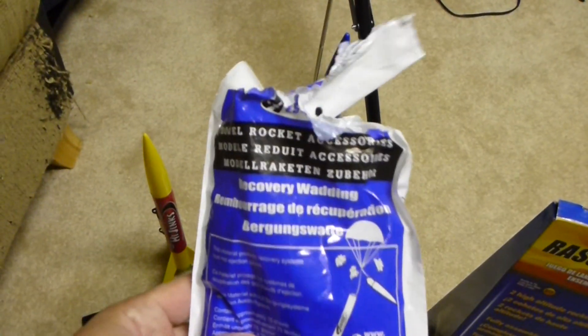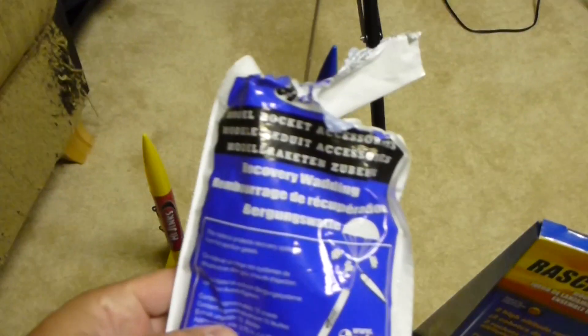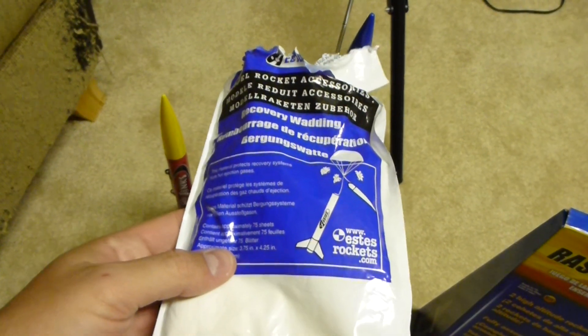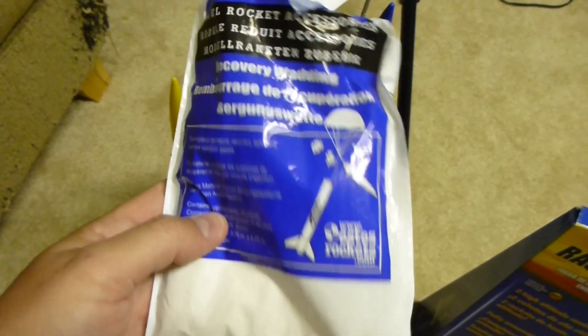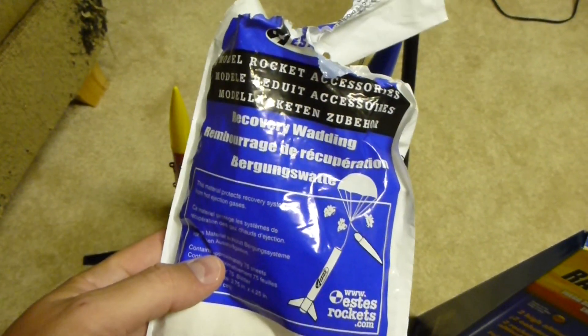So you can see the wind. What it does not come with is recovery wadding. You will have to have wadding between your motor and your parachute. Otherwise, when the rocket motor ejects the top, it'll melt your parachute.